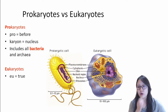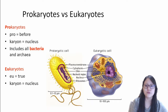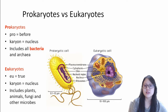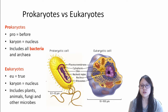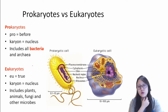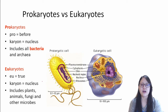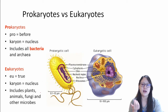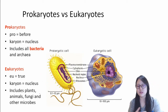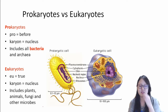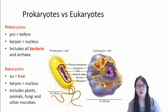Eukaryotes — eu means true. Karyon means nucleus. So, eukaryotes have a true nucleus. And this includes plants, animals, fungi, and other microbes.